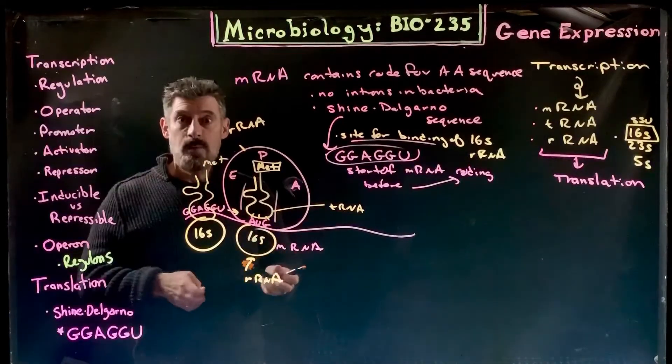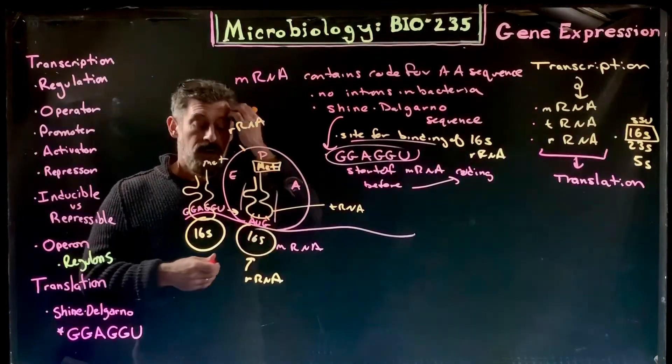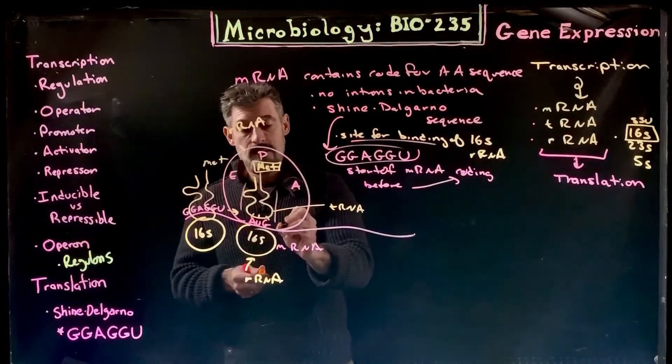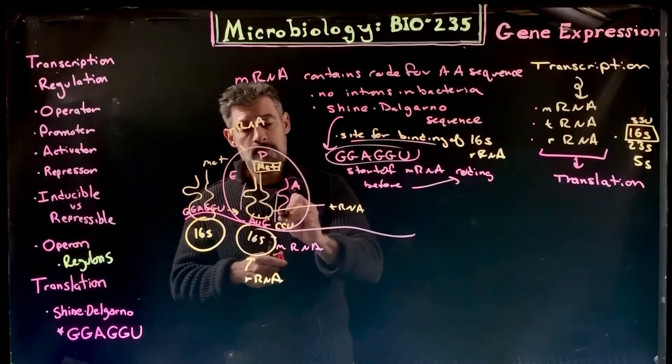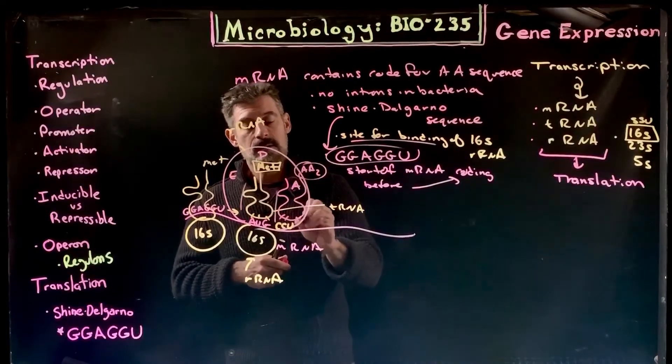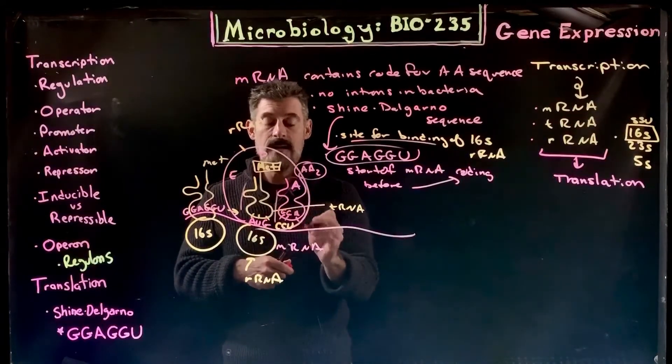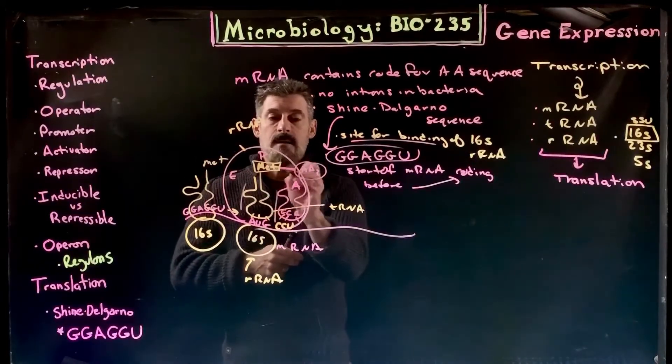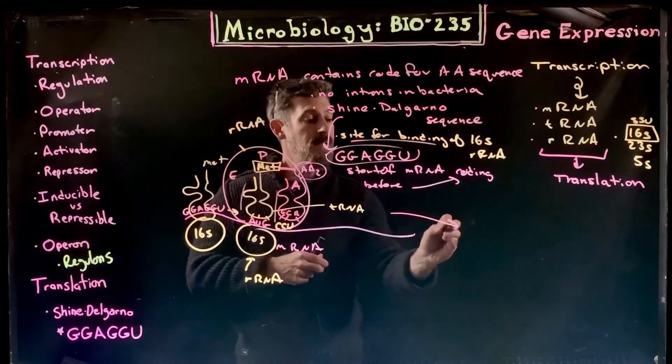That'll initiate the whole process, and after that occurs you'll get elongation of the sequence. That's the first amino acid. Then it will read the next codon, say CCU for example. The next transfer RNA comes in with the next amino acid bound to a transfer RNA that has the anticodon for CCU, so it'll have GGA here. Then that'll be added. The large subunit makes the new peptide bonds between these, and then that process will progress.